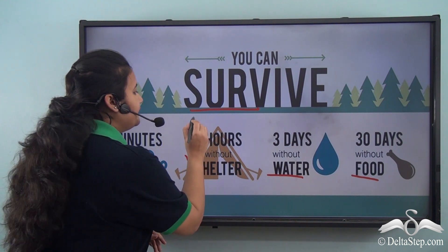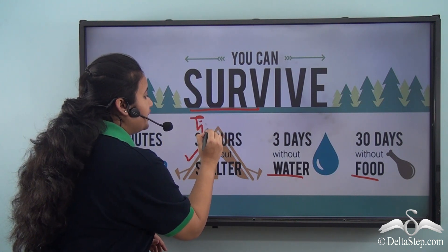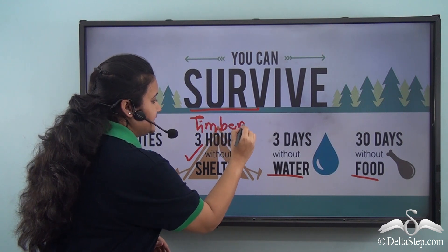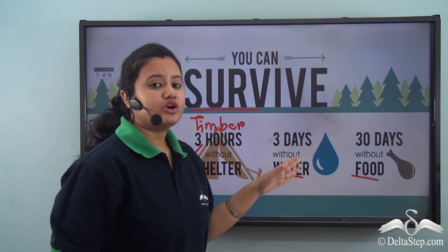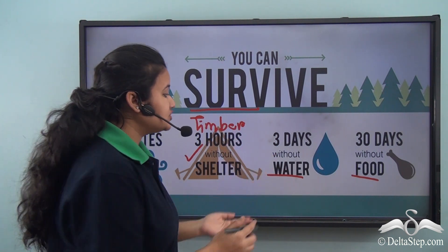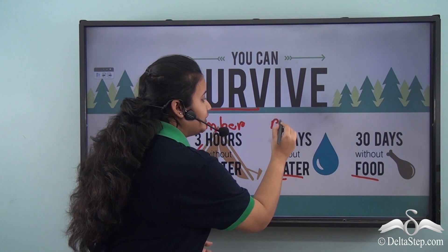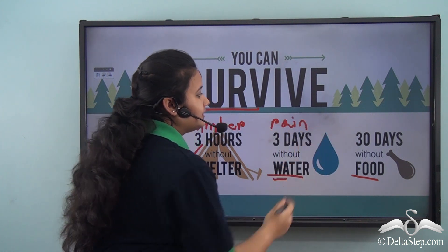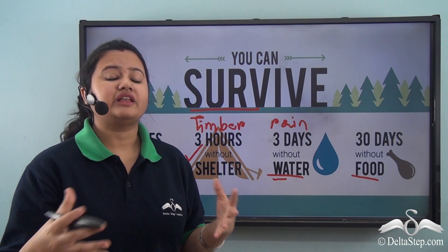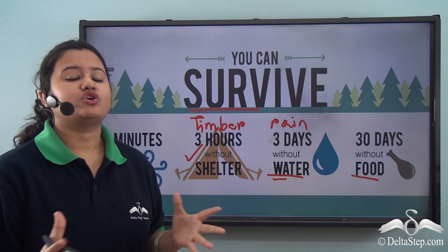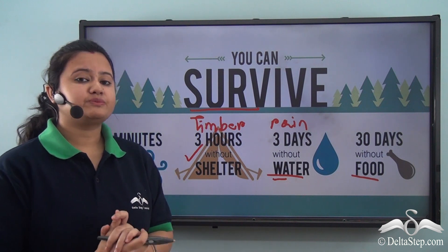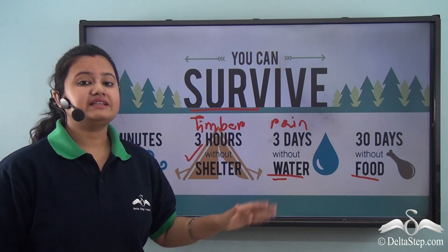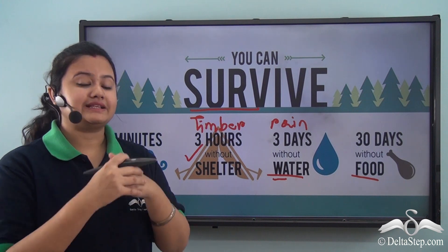The timber used for constructing and building houses is obtained from plants. Plants also provide us with fresh water in the form of rain. The fruits, vegetables, and cereals that form a major part of our diet come from plants. So we find that plants provide us with the basic things required for our survival or existence.